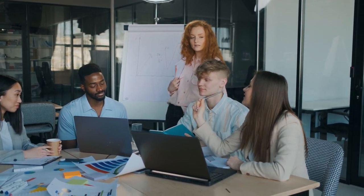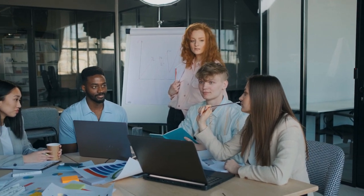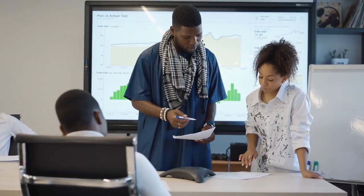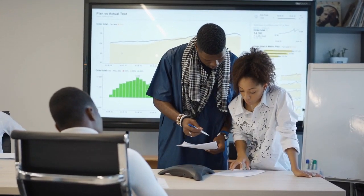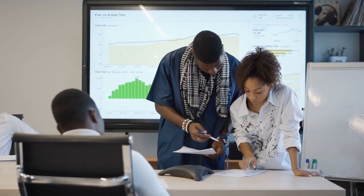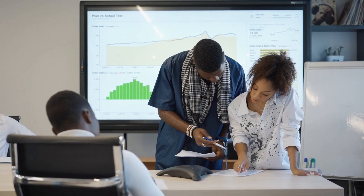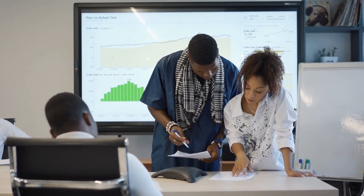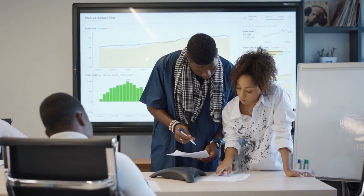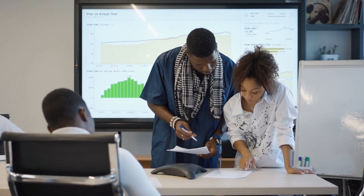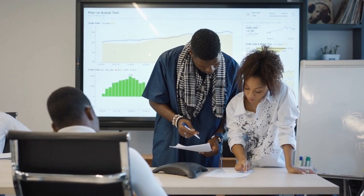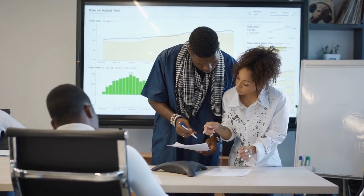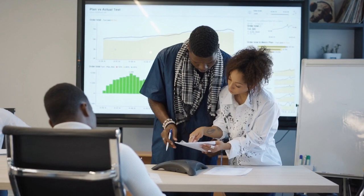In essence, the product increment in Scrum is a powerful concept that ensures regular tangible deliveries of value, encourages transparency, and provides opportunities for continuous improvement in the development process. It aligns with Scrum's iterative and adaptive nature, allowing the team to respond to changing requirements and deliver a product that adds value consistently.